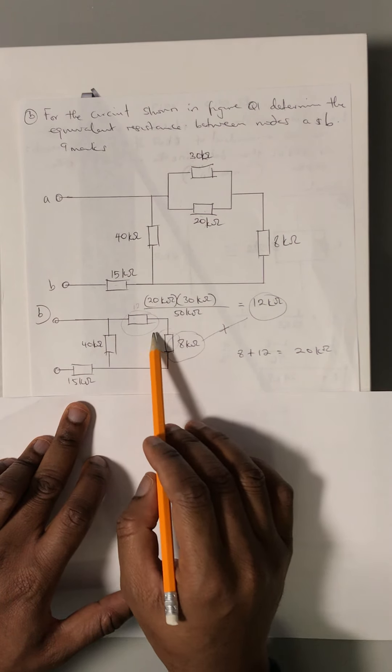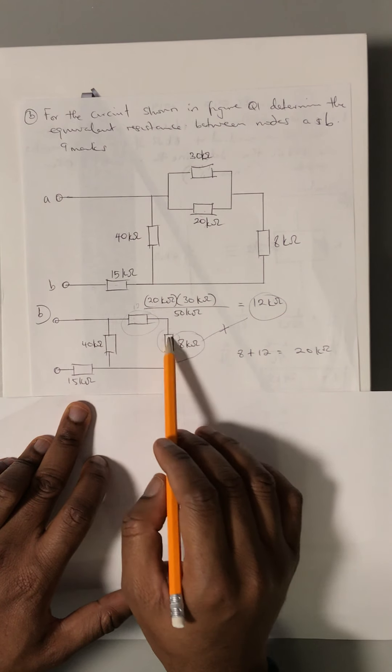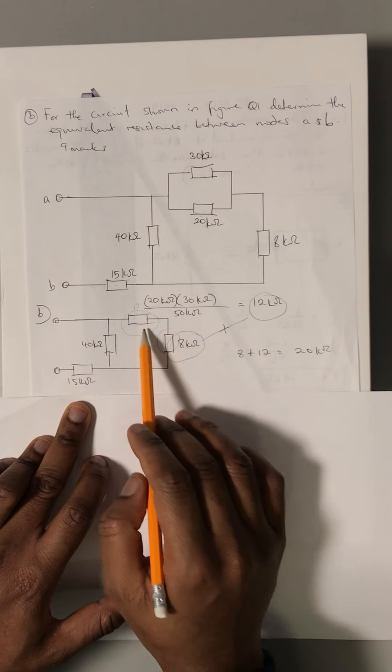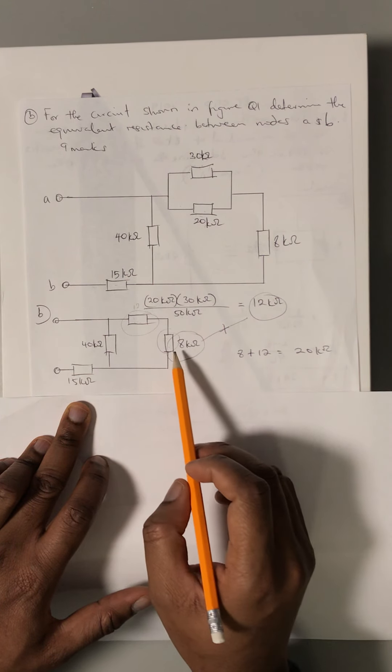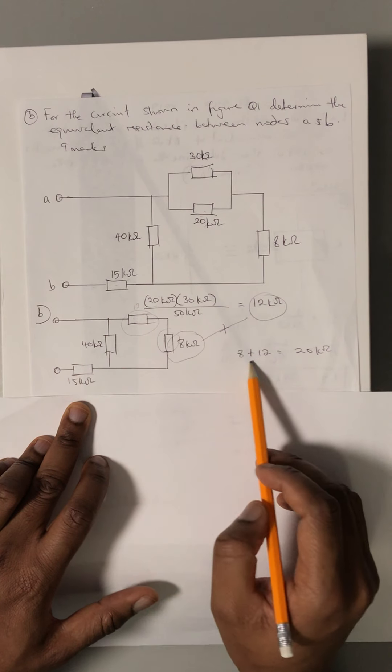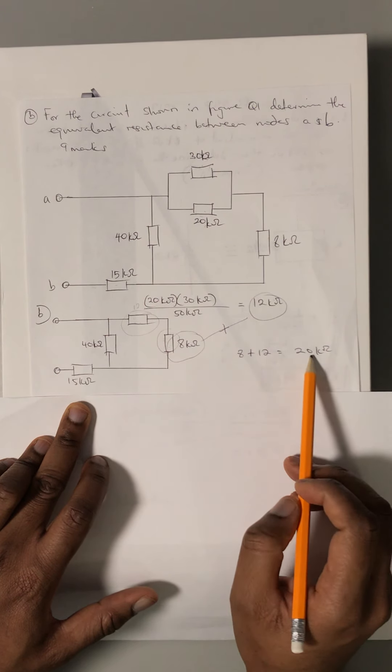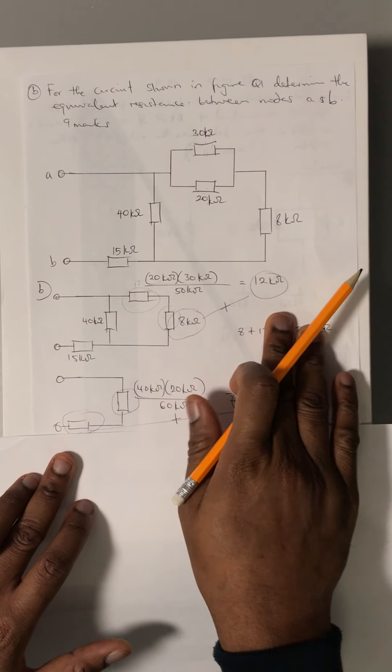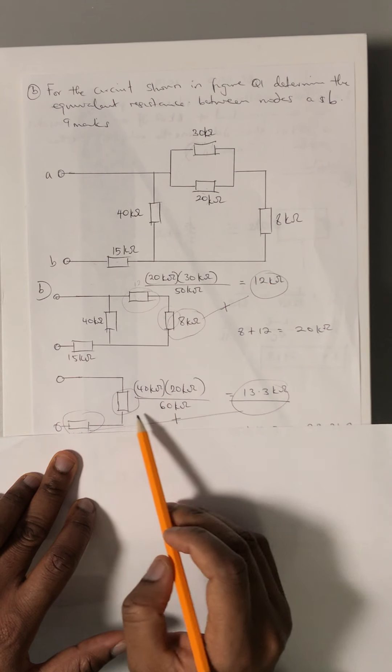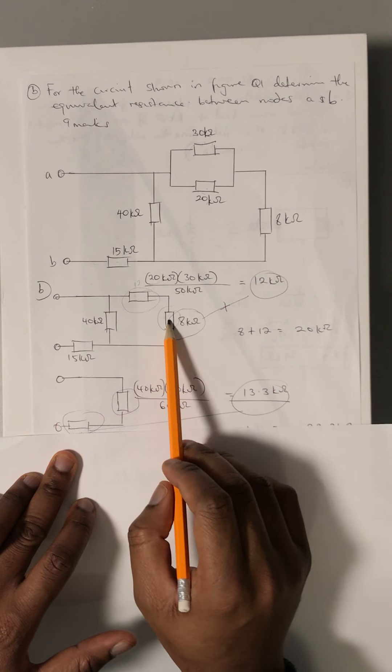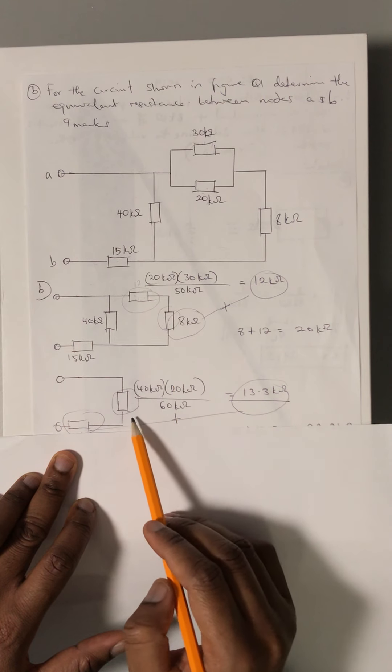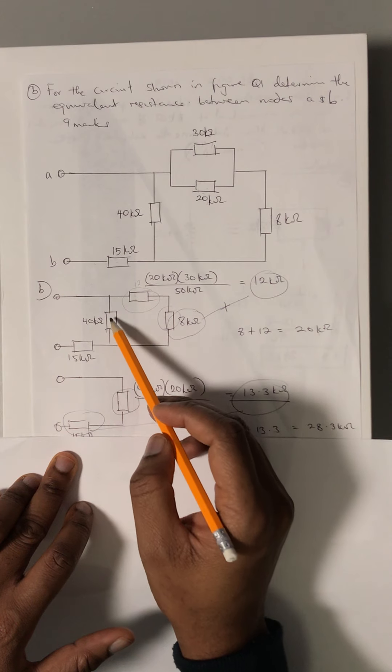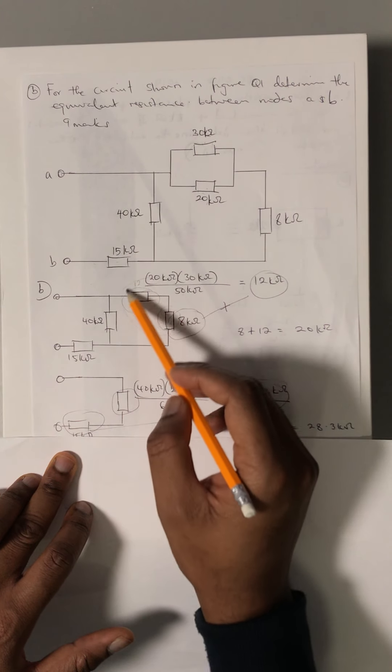We can add them straight away because they are in series. Equivalent resistor in series is total addition, so we add them together. It becomes 8 plus 12 kilo-ohms equals 20 kilo-ohms. Now we can see that our 40 kilo-ohms here will be in parallel with the two resistors which we have as 20 kilo-ohms equivalent.